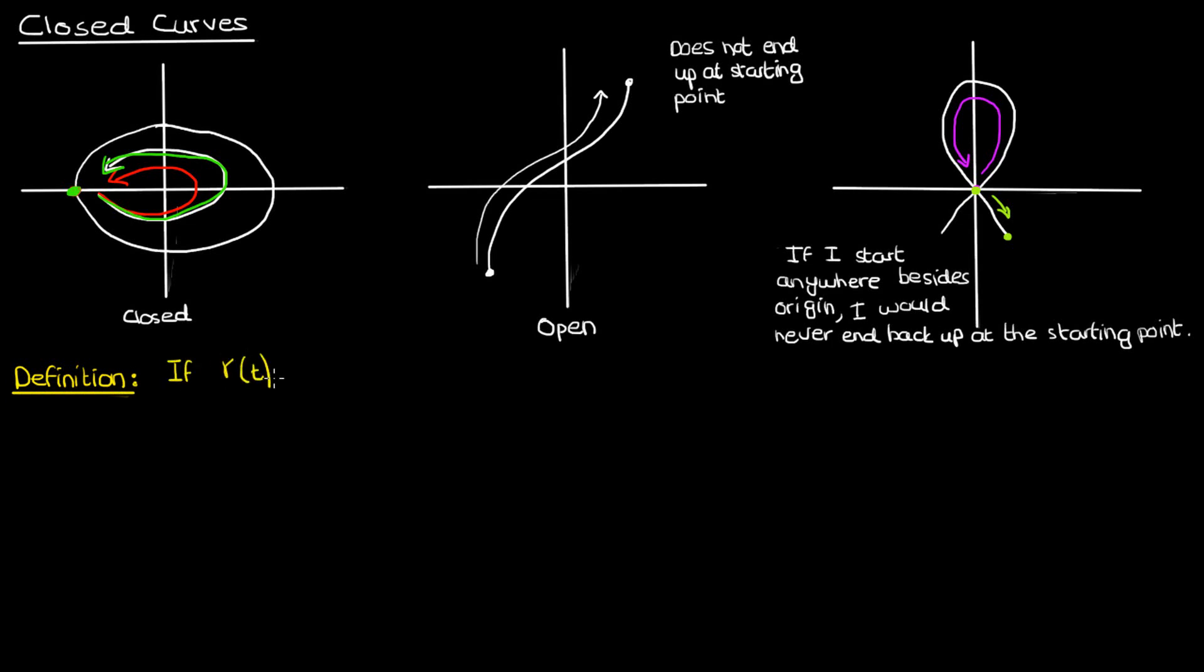If gamma is a smooth curve taking a real parameter t and mapping it to some coordinate in R^n, then gamma of t is said to be T-periodic if for all real values of the input parameter t, gamma of t plus capital T is equal to gamma of t, where capital T is some real constant.